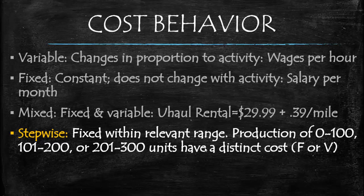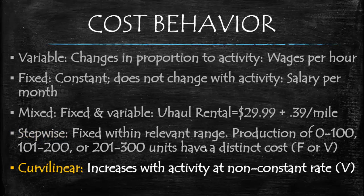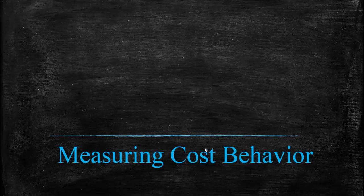A great example of step-wise costs would be if a company were to produce 0 to 100 units, there's a distinct cost, but if it produced 101 to 200 units, the cost may change. These costs are categorized as either fixed or variable. The curvilinear cost is similar to the variable cost in that it increases with activity; however, it increases at a non-constant rate and is not proportionate with activity.